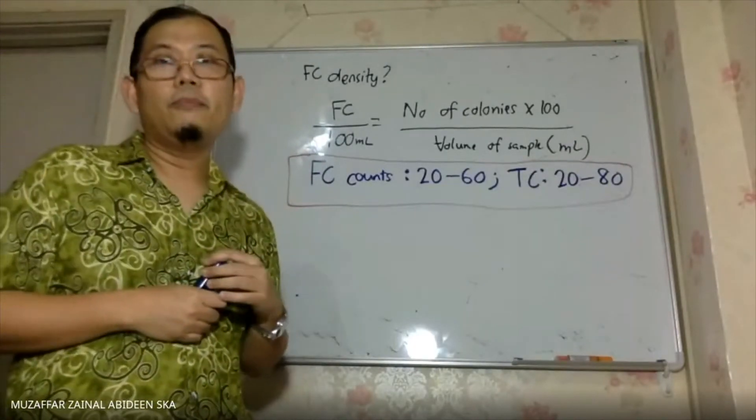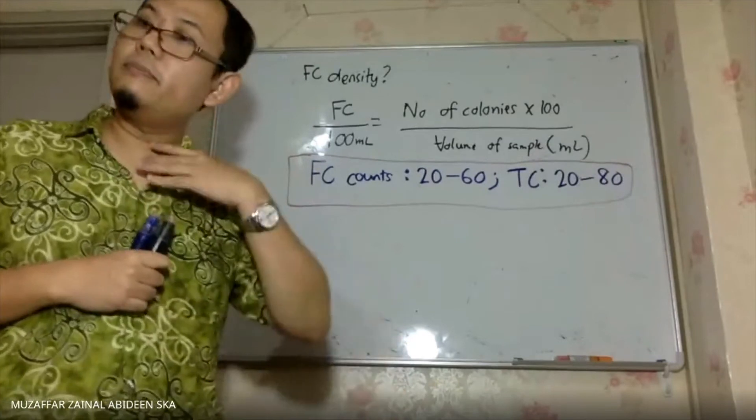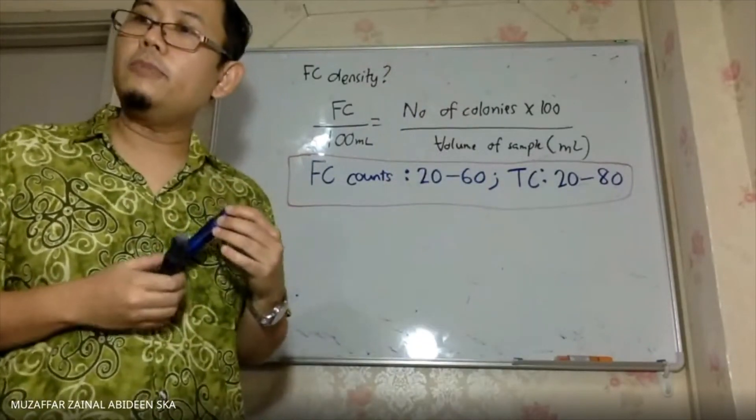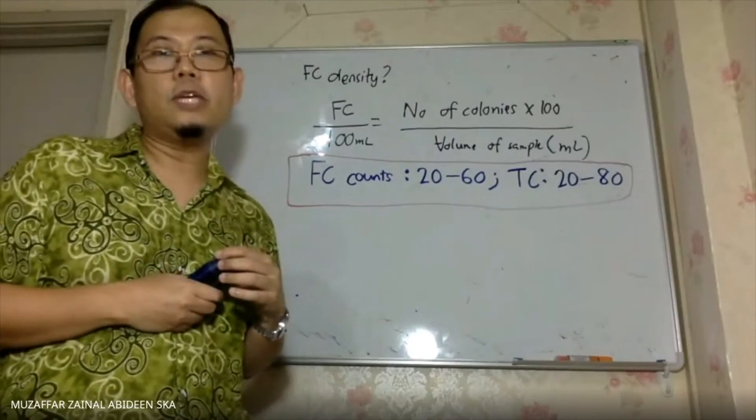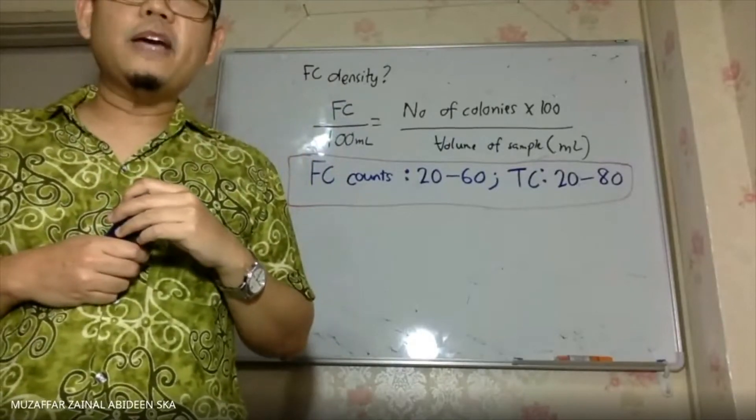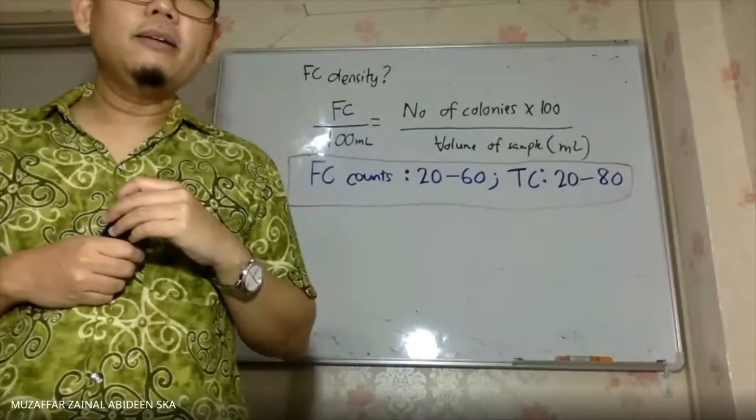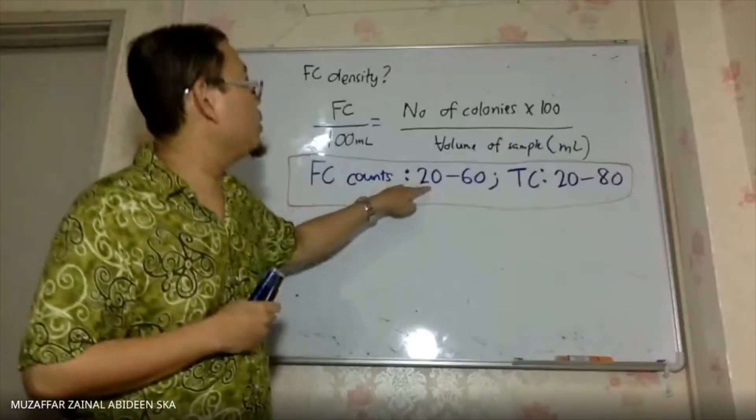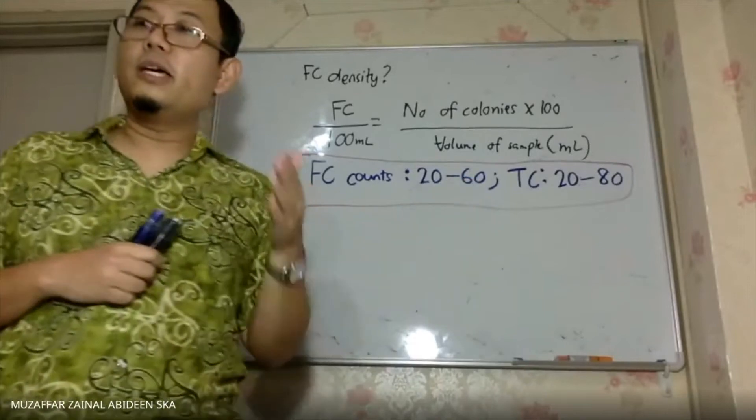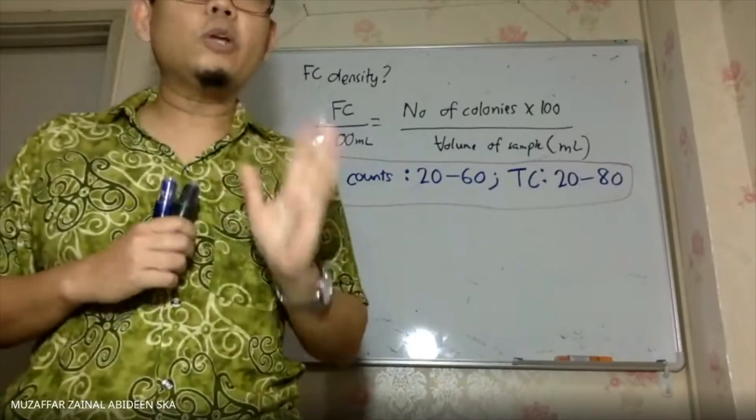Once they filter 25 ml they obtain 89, is that okay? 89 also not okay. And then 10 ml they obtain 35, is that okay? Okay. Then it's okay. What about 3 ml, it got 11, can it be accepted? Cannot.